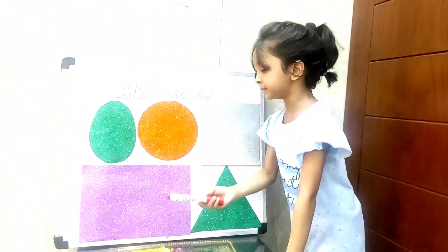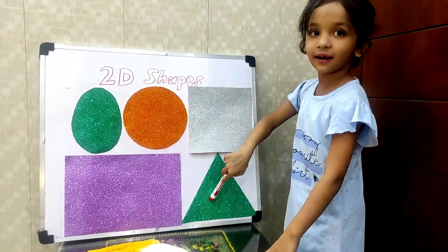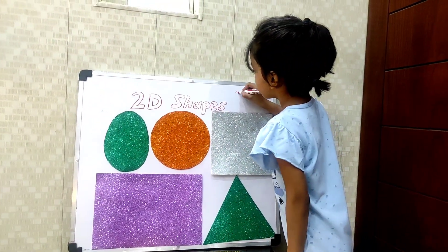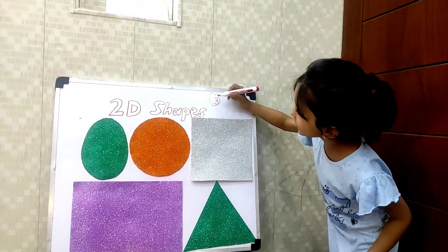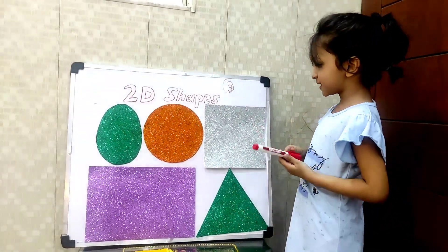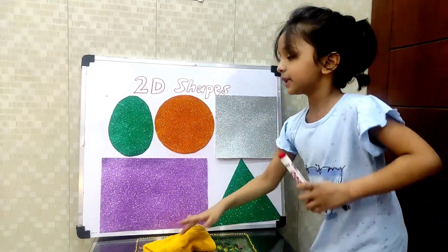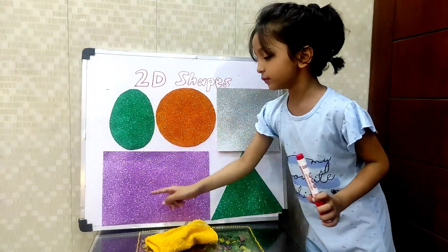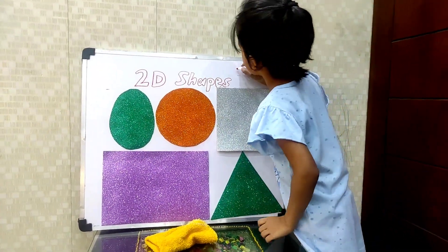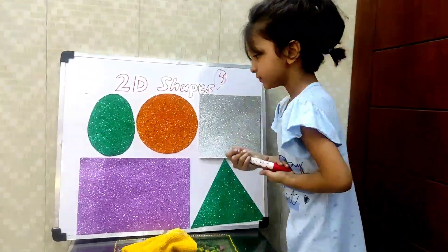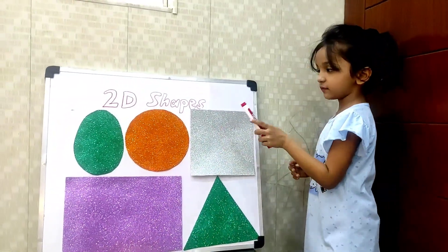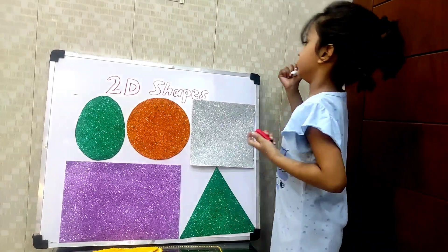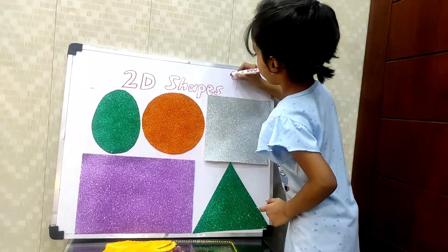The first shape is Triangle — Triangle has 3 sides. Next is Rectangle — it has 4 sides, too long and too small: 1, 2, 3, 4. A square has 4 equal sides: 1, 2, 3, 4. But all are equal. 4 corners.